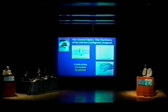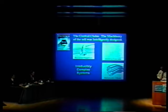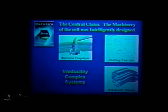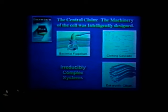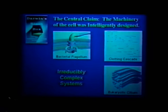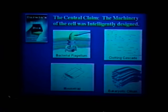Mike, you made a central claim that the machinery of the cell — you mentioned the bacterial flagellum, the eukaryotic cilium, and in your writings the blood clotting cascade — were intelligently designed. We know that because these are all, by your definition, irreducibly complex systems. Another example of an irreducibly complex system is a mousetrap.